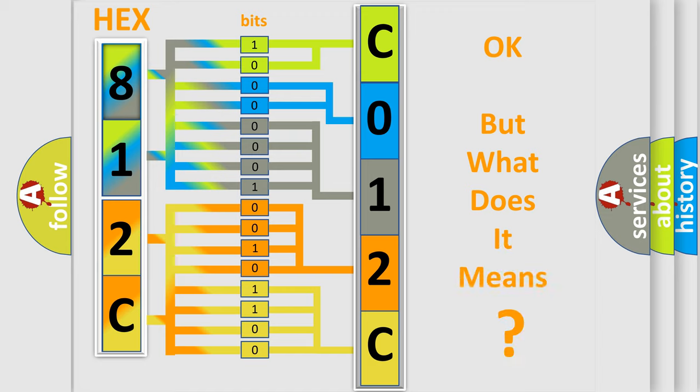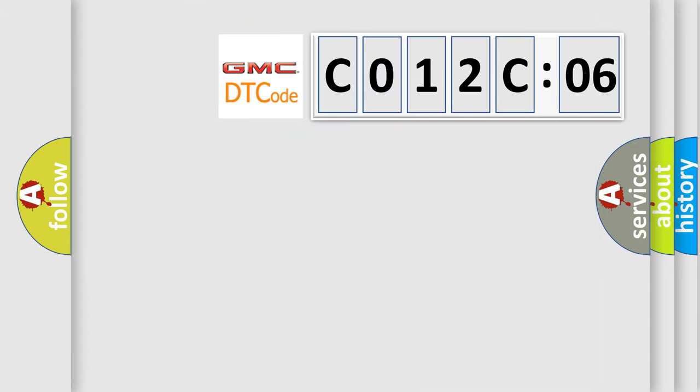The number itself does not make sense to us if we cannot assign information about what it actually expresses. So, what does the diagnostic trouble code C012C06 interpret specifically for GMC car manufacturers?